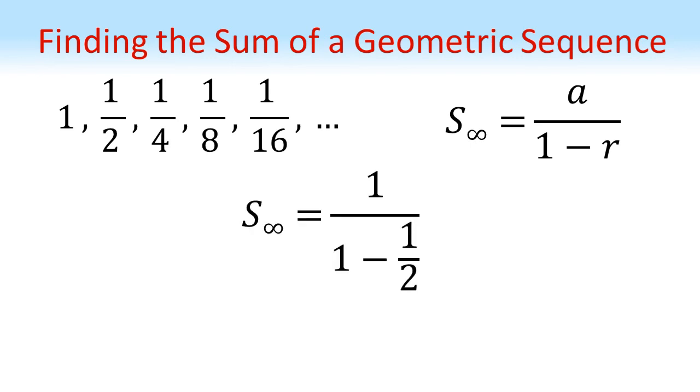Therefore, the sum to infinity equals 1 over 1 minus a half, which equals 2. In other words, if we did the sum 1 plus a half plus a quarter plus an eighth and so on, we will tend towards a limit of 2.